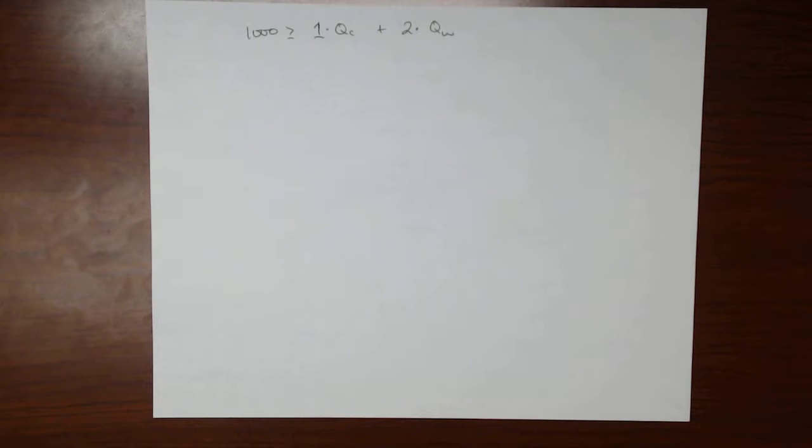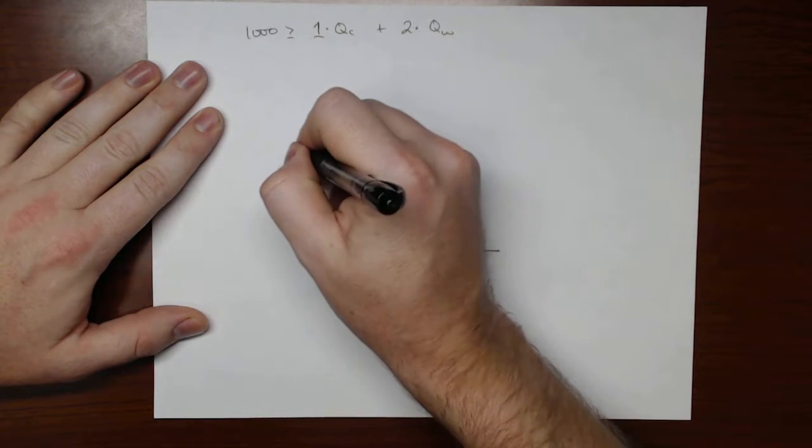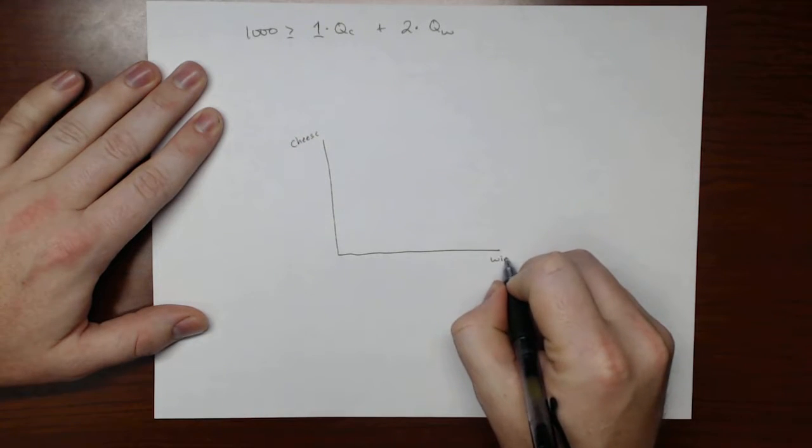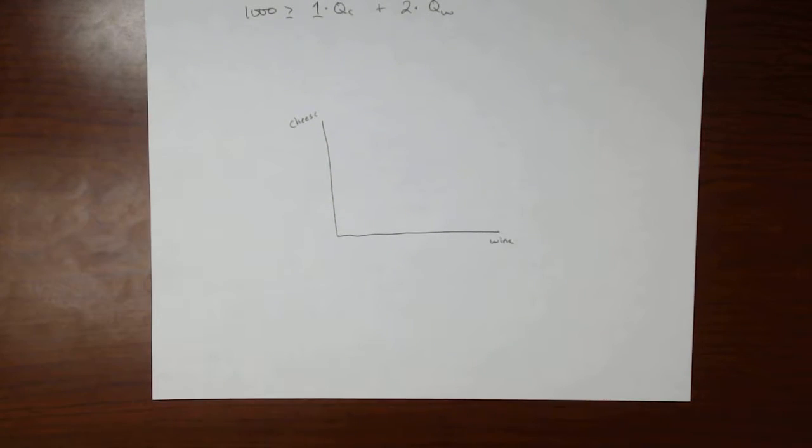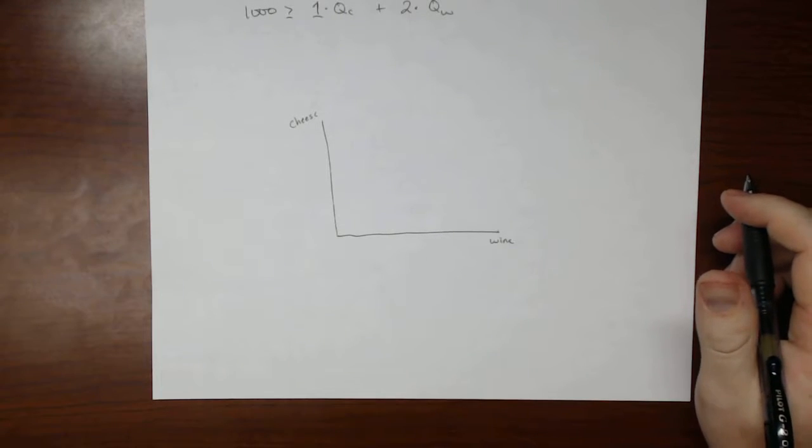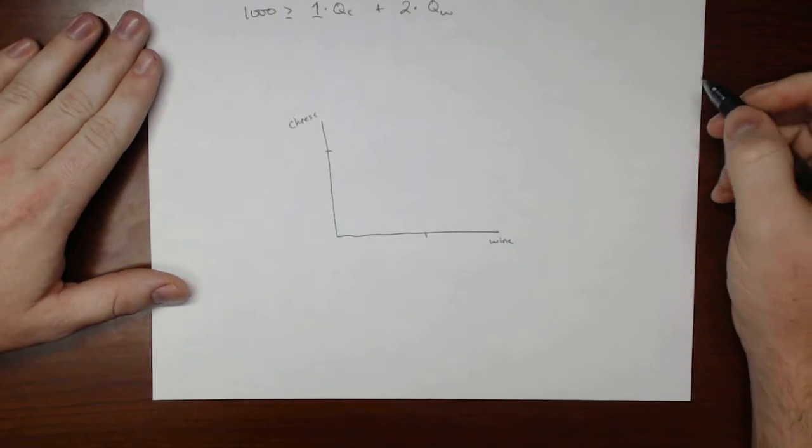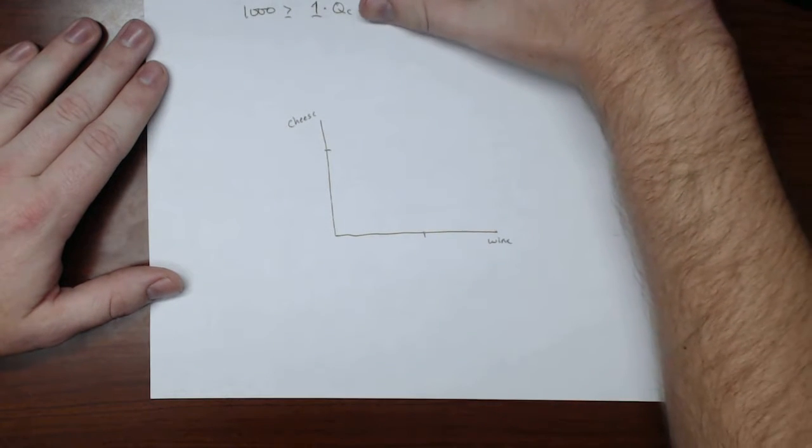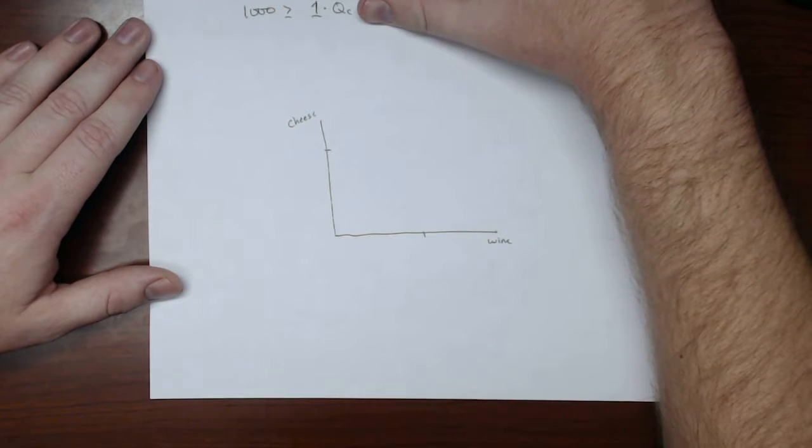Now, how can we use this to determine our PPF? So let's say we have cheese and wine. Well, let's pretend that they spend all of their time producing cheese. So what we're interested in are the intercepts here. So if they spend all their time producing cheese, then we just solve this equation for QC.